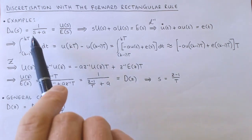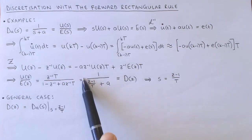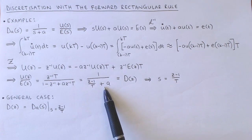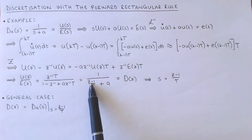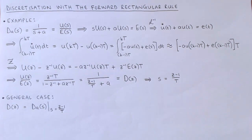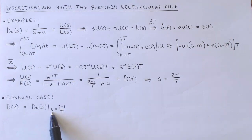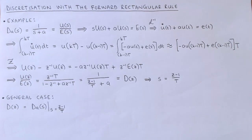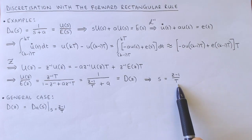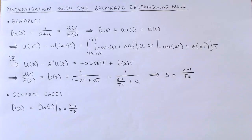When we compare the continuous controller with the discrete controller, it is clear that we have replaced s with (z − 1)/T. The general case works the same way, and we therefore discretize the designed controller by taking the continuous controller and replacing s with (z − 1)/T. The forward rectangular rule therefore defines a mapping from s to z given by s = (z − 1)/T.